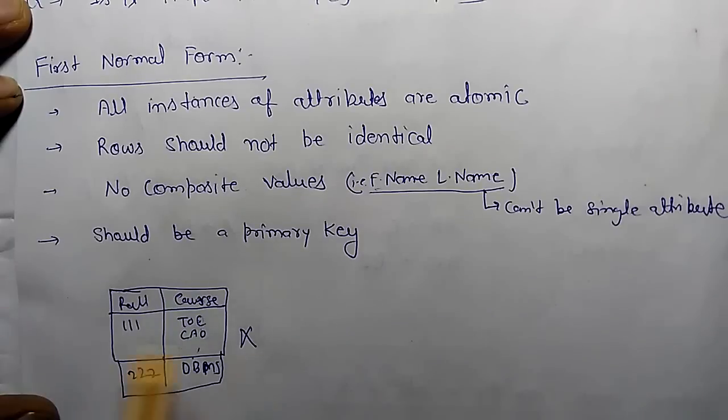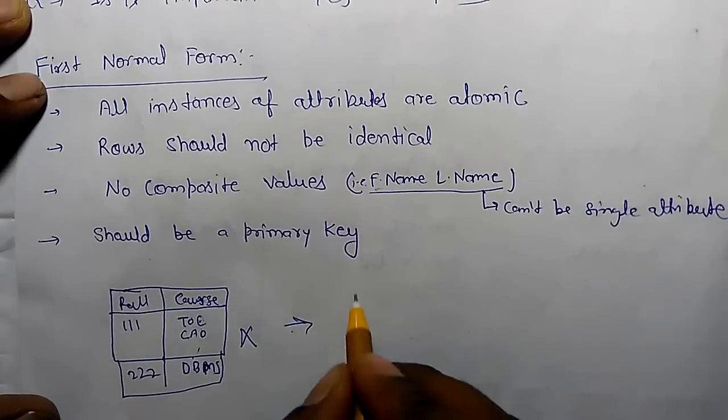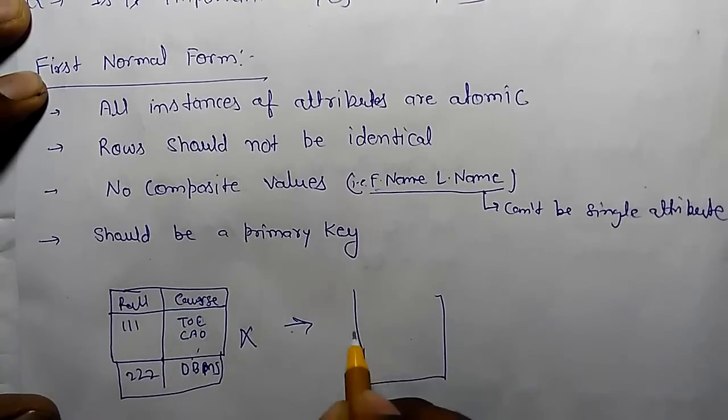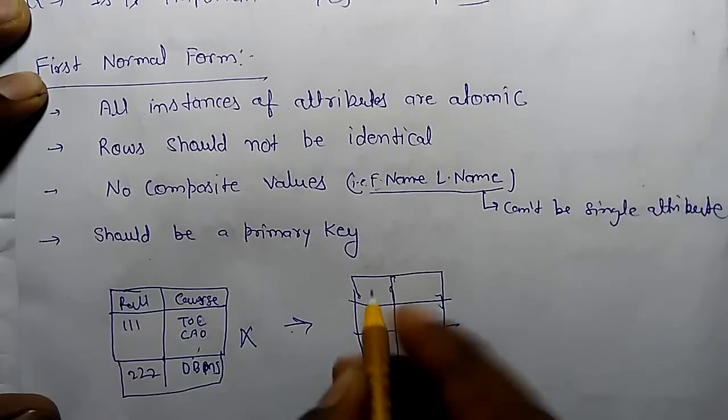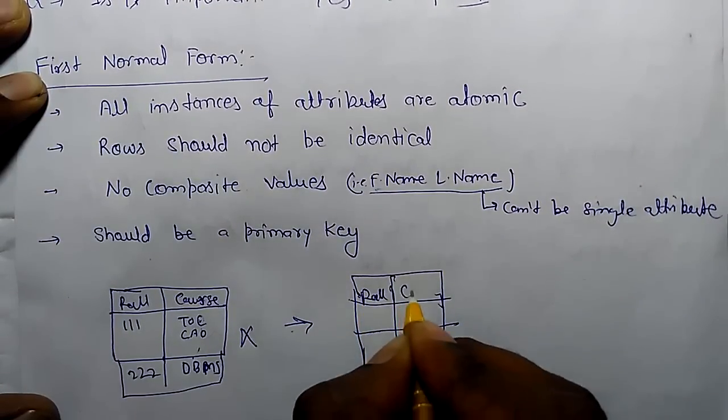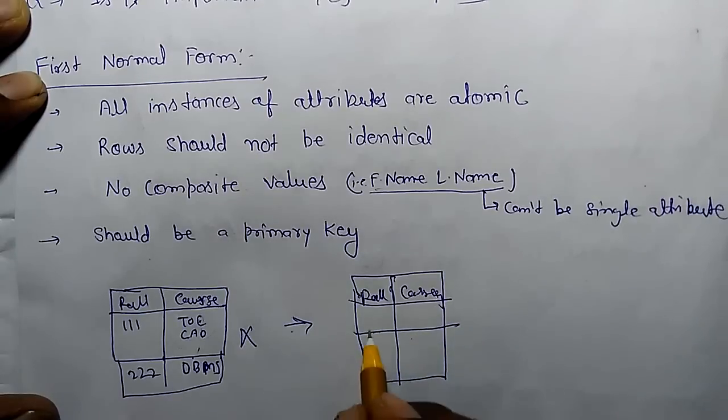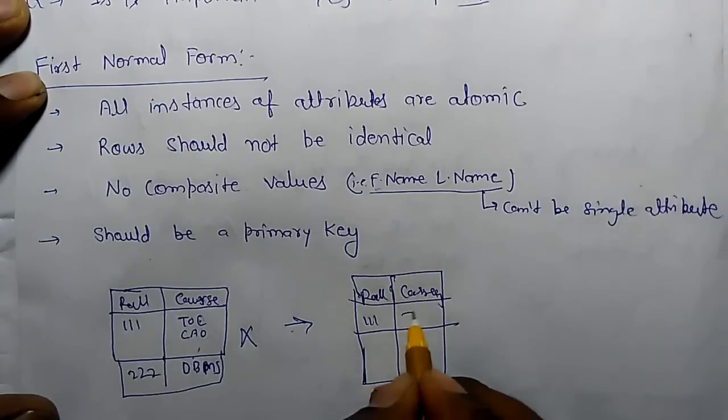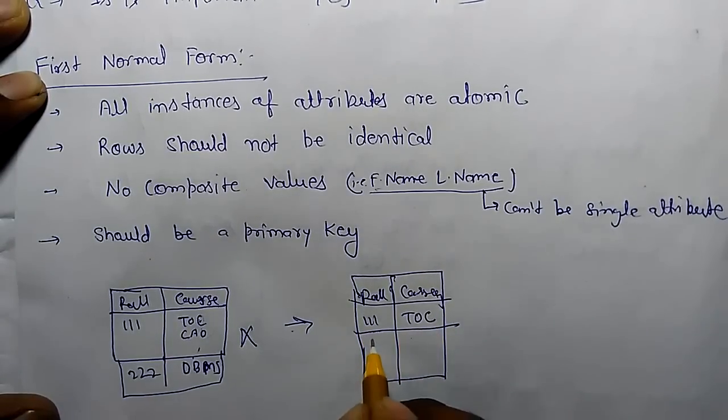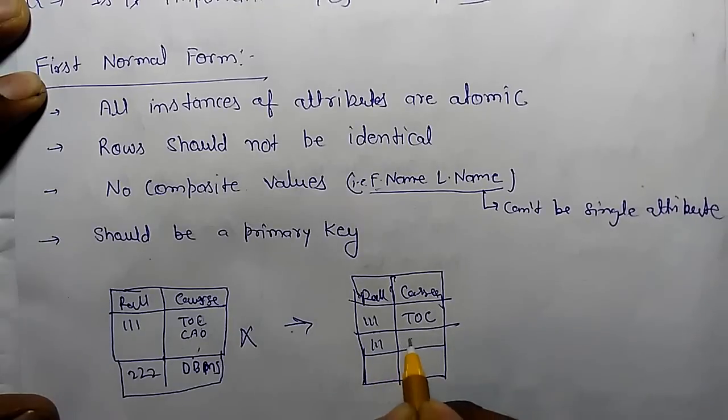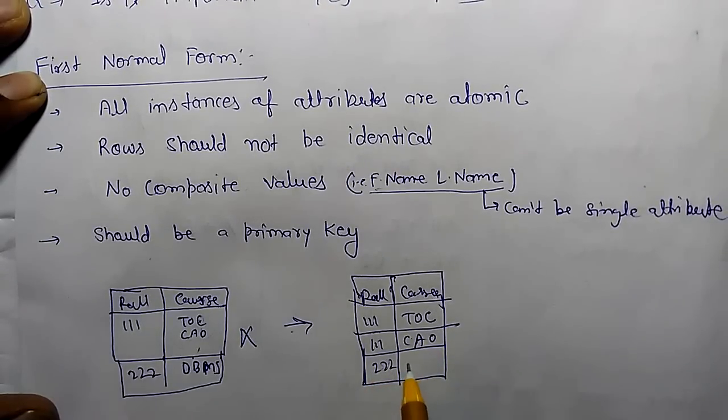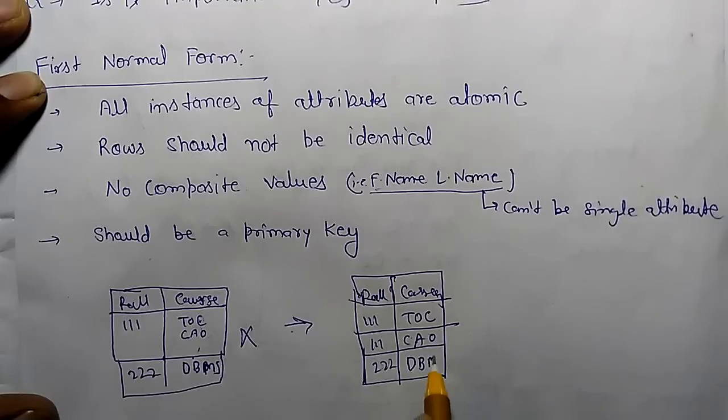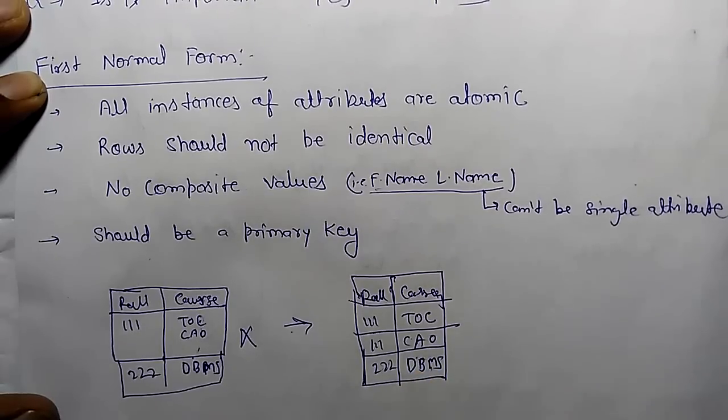For first normal form, roll number and course: 111 has a course TOC, and again 111 has CAO. Now 222 has DBMS. Now this table is in first normal form.